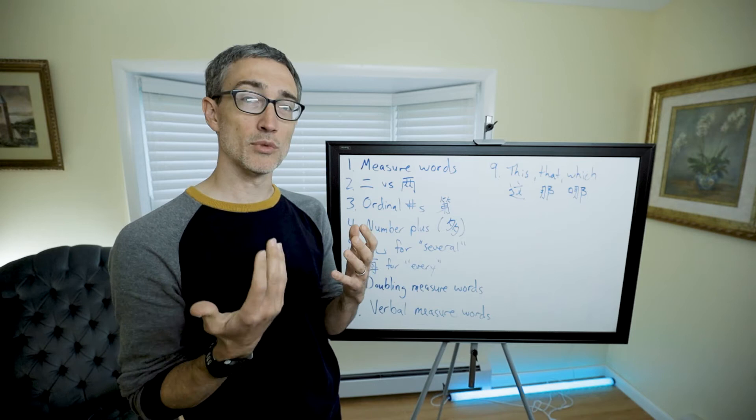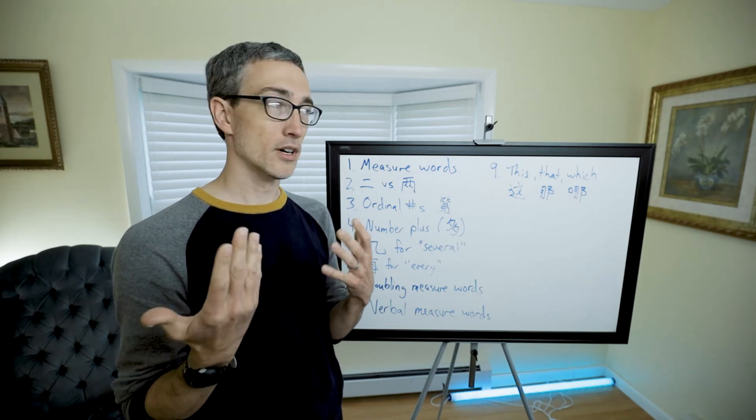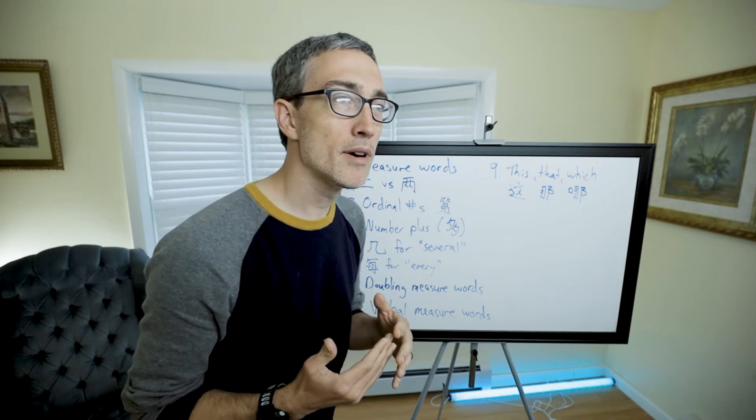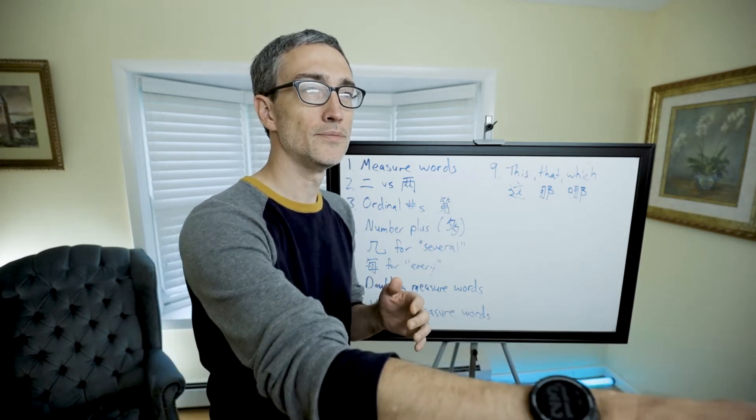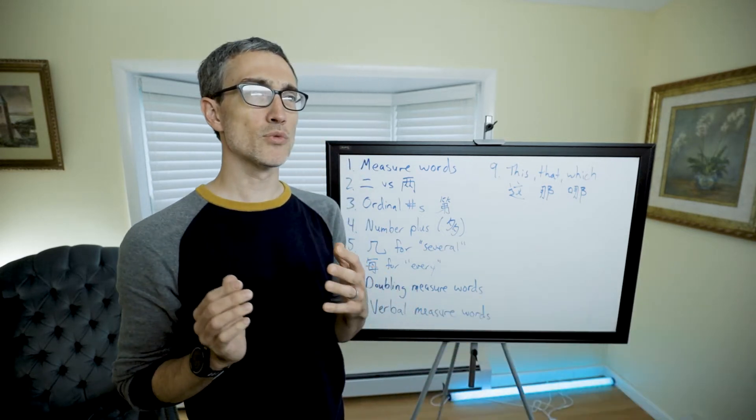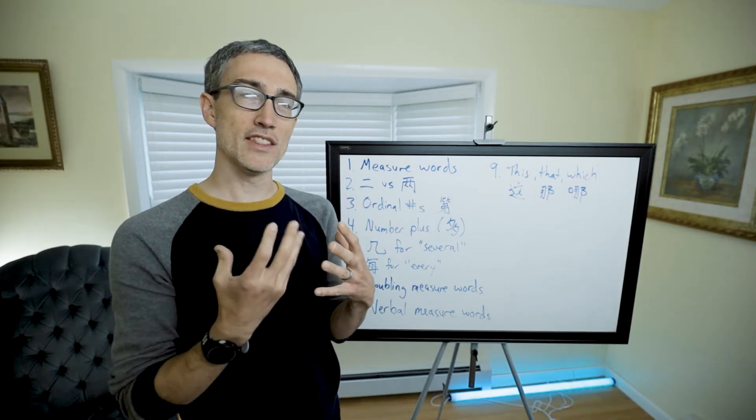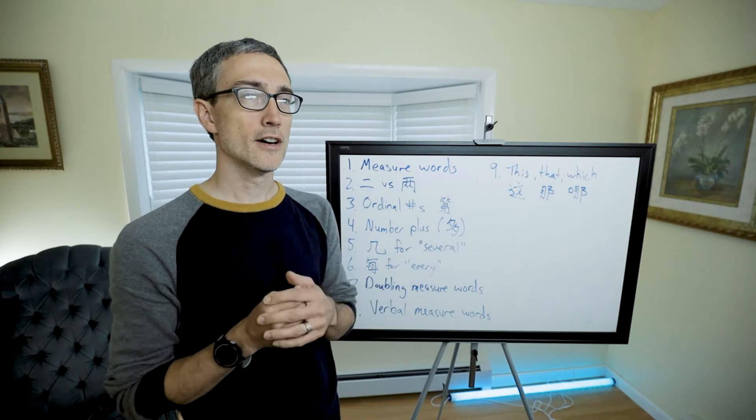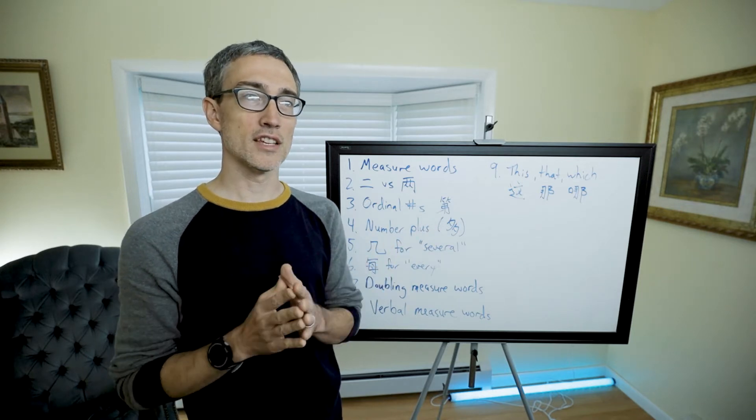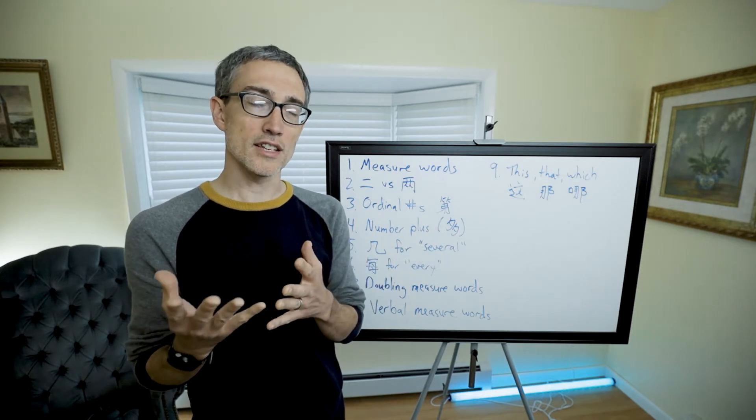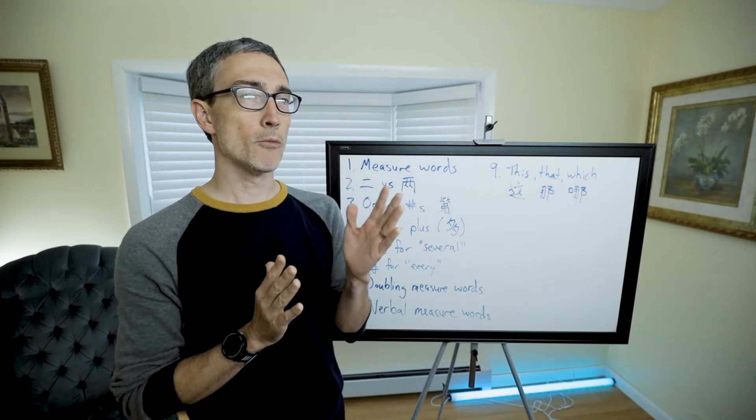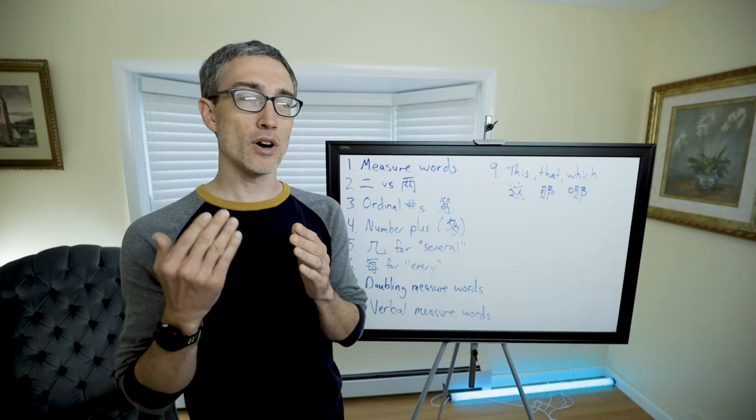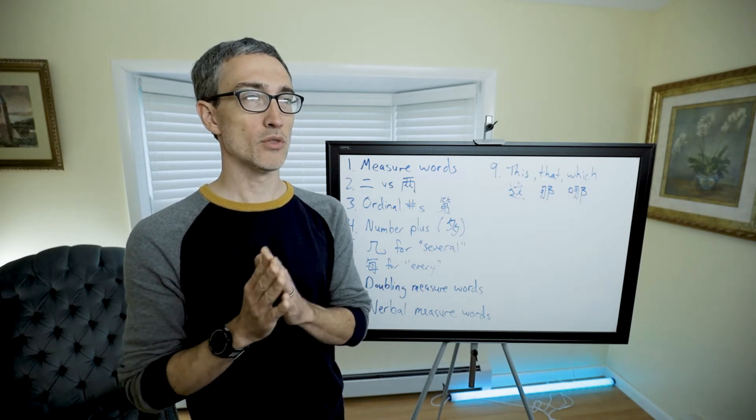In Chinese you need a measure word, just like we need a measure word for ice cream. Some measure words indicate some amount of information in the measure word itself. Zhang is used for things with a flat surface. Tiao is used for long thin things like rivers or noodles.